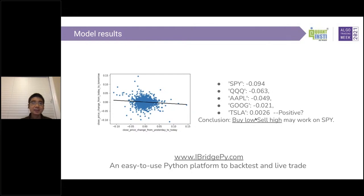The next part is automated trading using iBridgePy to do algorithm trading. iBridgePy is an easy-to-use Python platform where you can backtest and live trade with different brokers. The main difference between iBridgePy and other products is 100% privacy — you download iBridgePy to your computer, and everything happens on your computer, so you don't need to worry about privacy issues. You can also use iBridgePy to manage multiple accounts. iBridgePy can backtest using any data providers — download historical data from any provider to your local computer and backtest your strategy.